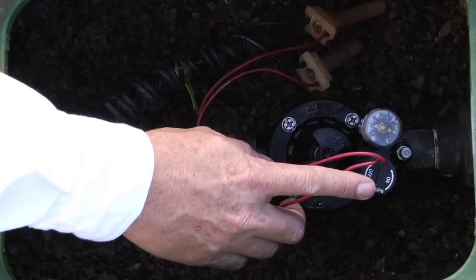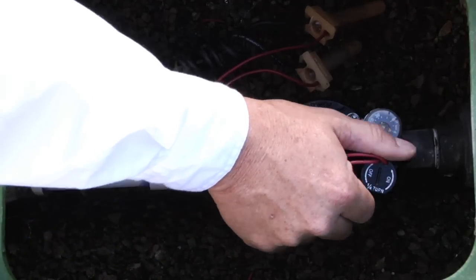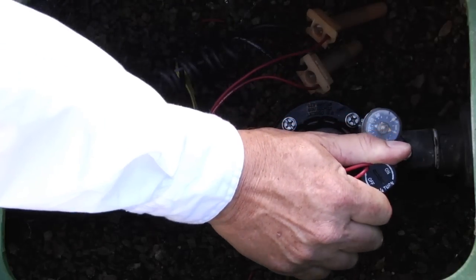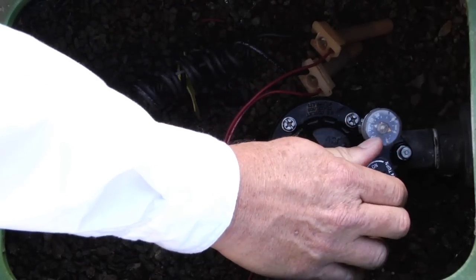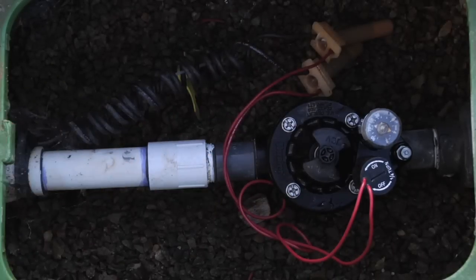To manually operate the valve, one would take the solenoid and turn it a quarter turn counter-clockwise. You'll hear the water start to flow. Let go of the solenoid.